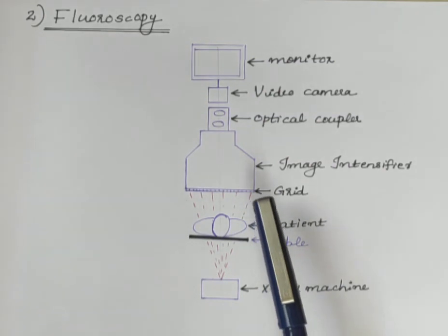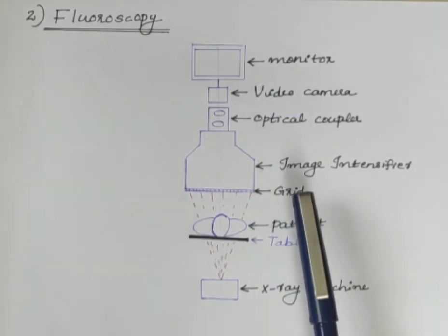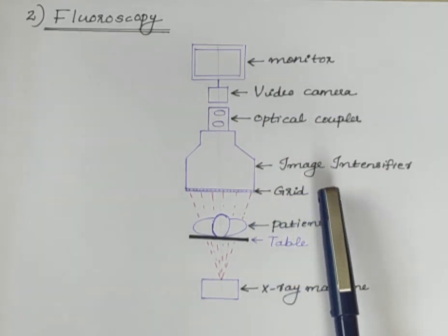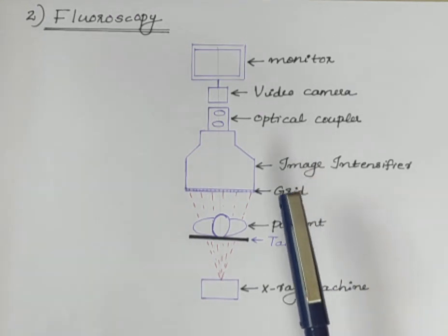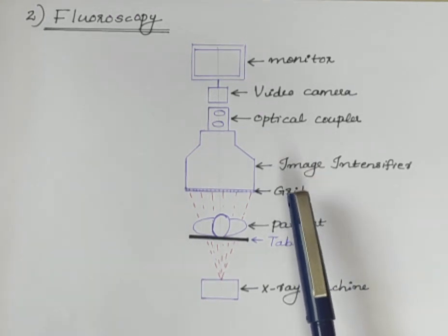The primary function of fluoroscope is to perform dynamic studies, that is, the fluoroscope is used to visualize the motion of internal structures and fluids.